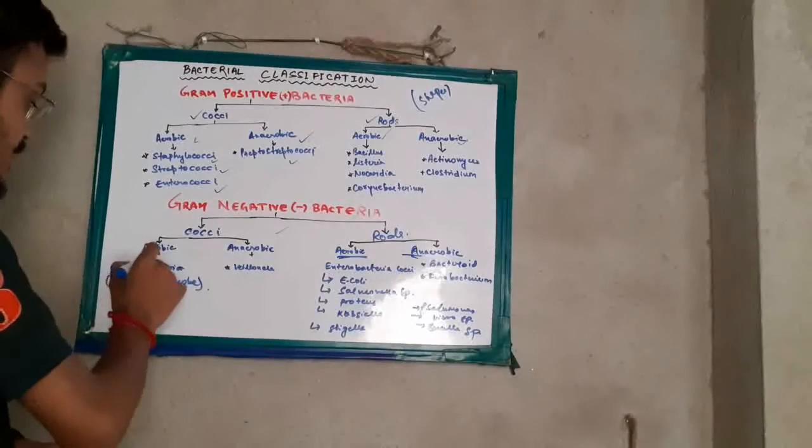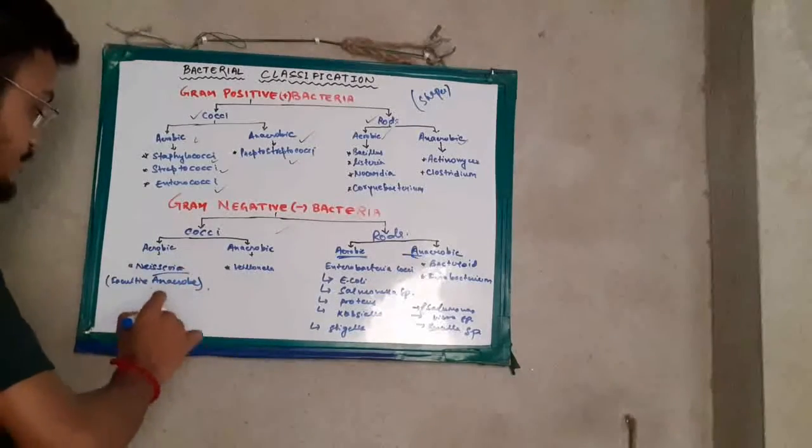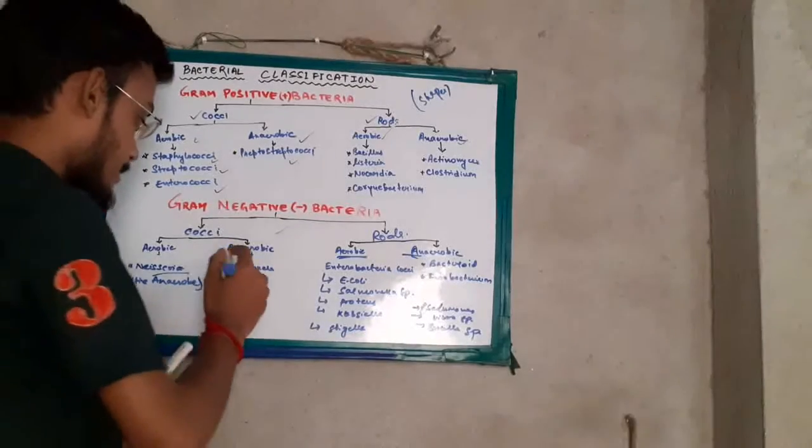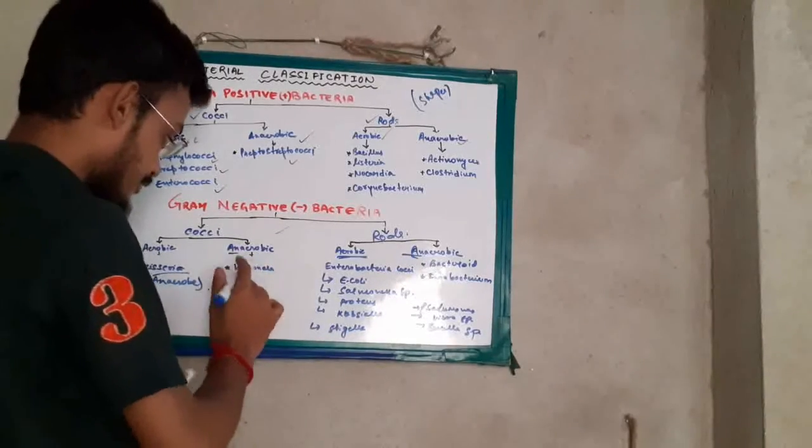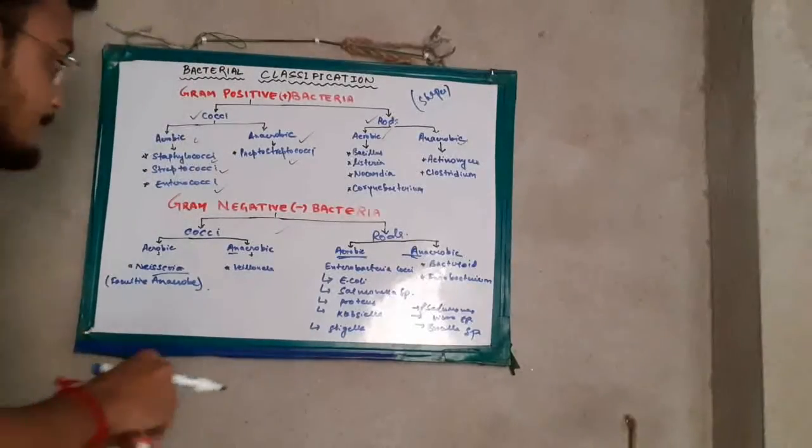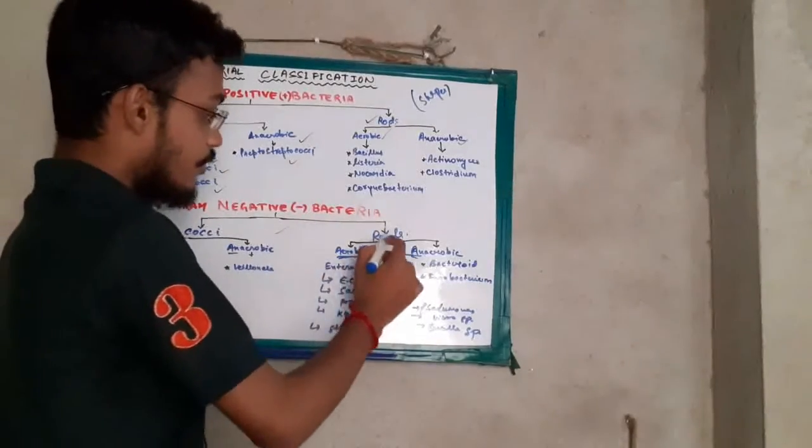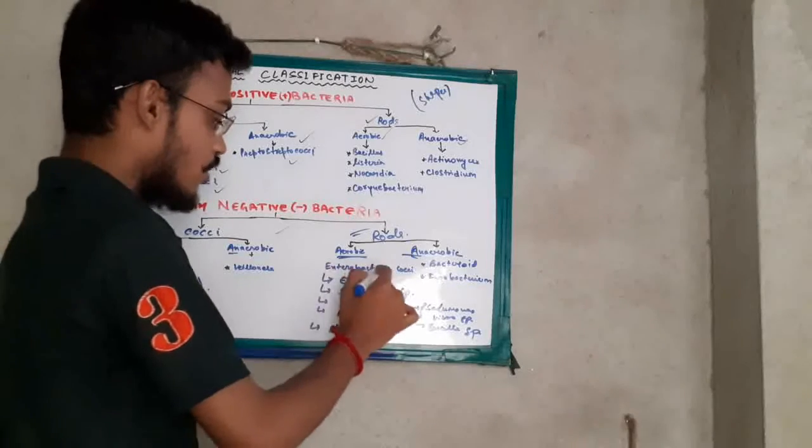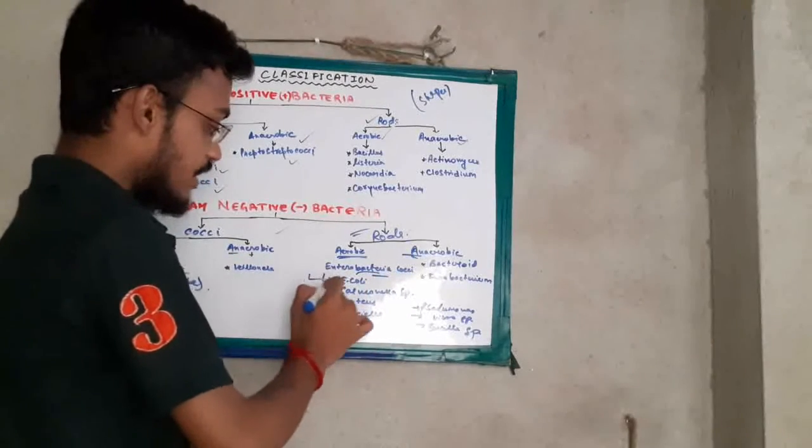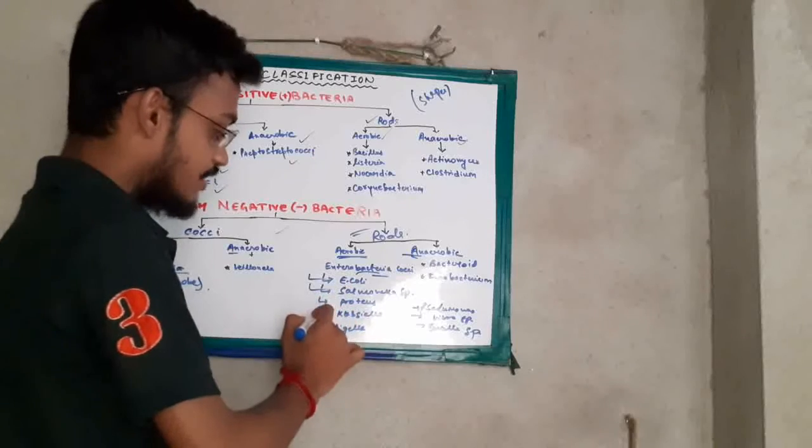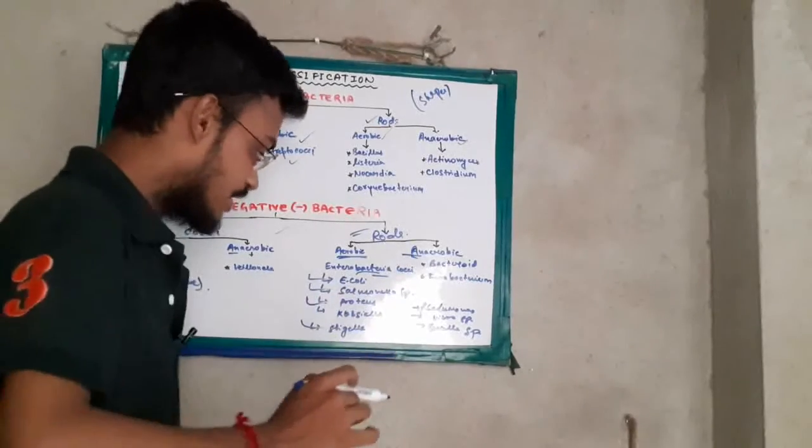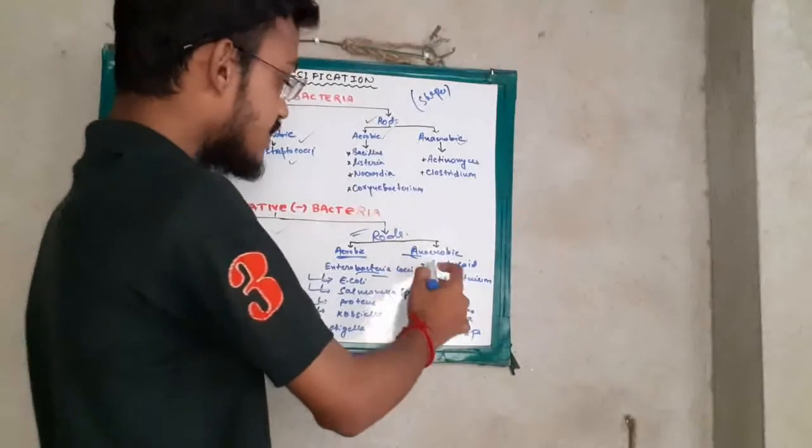In aerobic we have Neisseria, which is also called facultative anaerobic. In anaerobic we have Veillonella. In aerobic for rods, we have Enterobacteriaceae, which is having E. coli, Salmonella, Typhae, Shigella, Klebsiella species.